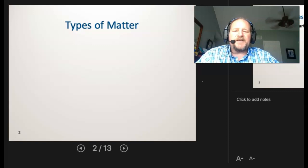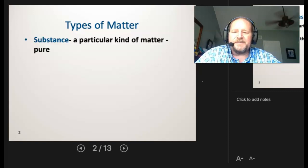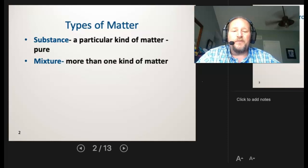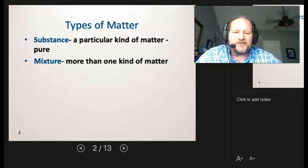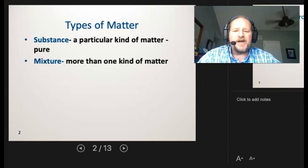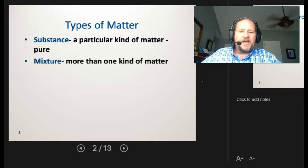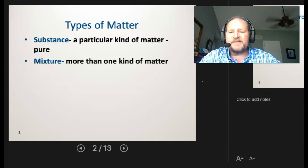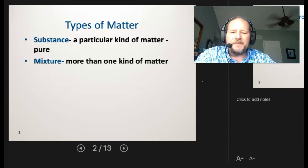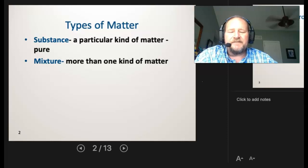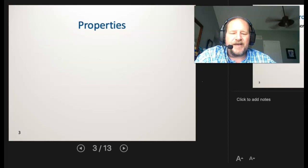Well, matter itself breaks into several things. The first thing we're going to be looking at is substances. So a substance is a particular kind of matter. It's pure. Or it could be a mixture. So a mixture would be more than one kind of matter. So it'd be two different substances mixed together. Now, how do we keep those straight?